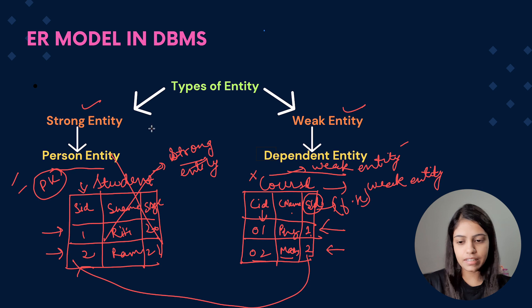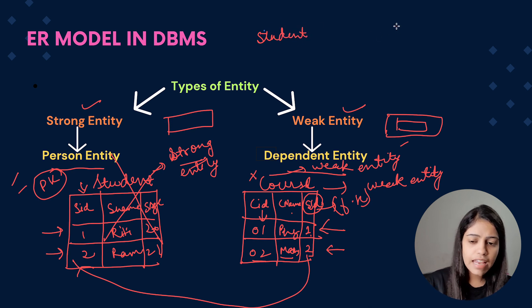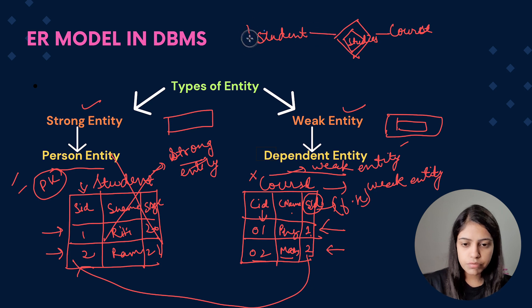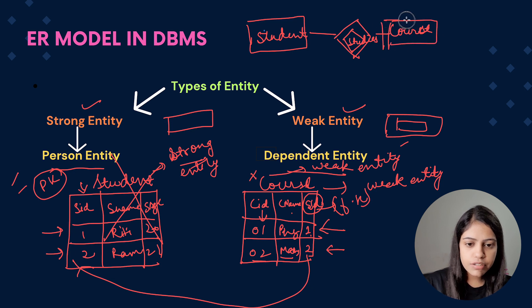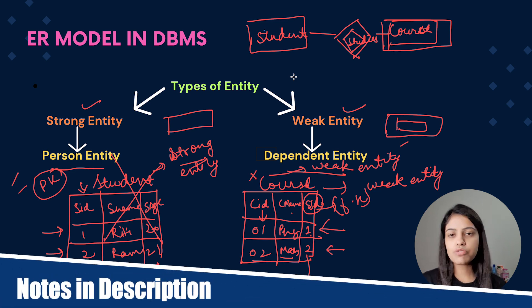In ER diagrams, a strong entity is represented by a single rectangle and a weak entity is represented by two rectangles (a double rectangle). Whenever there is a relationship between a strong entity — student — and a weak entity — course — the relationship between them is represented by two diamonds. So student (strong entity) uses a single rectangle, and course (weak entity) uses a double rectangle. This is how we represent the entity relationship between strong and weak entities.